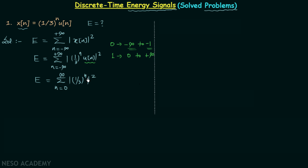Since (1/3)^n will always be positive, we can remove the modulus. The total energy equals the summation from n equal to 0 to plus infinity of (1/3)^n whole square, which gives us (1/3)^(2n), or equivalently (1/9)^n.